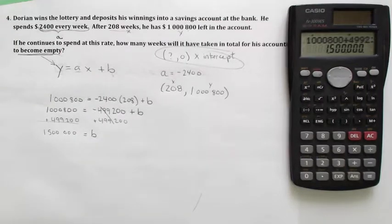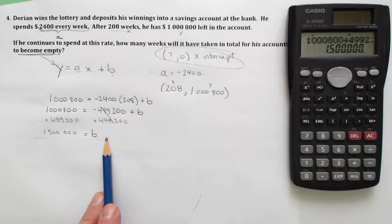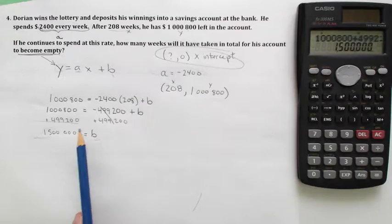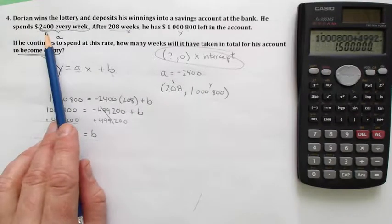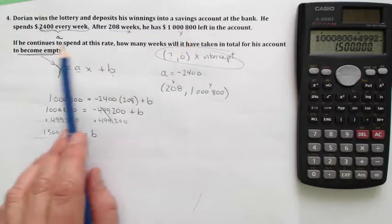It's pretty good lottery winning. I mean, that's the initial value—that's what he started with. So the day he cashed that lotto check, he put $1.5 million in his bank. He spent $2,400 per week. After 208 weeks, he had a million left and eight hundred. And we want to know, hey, when does his account become empty?